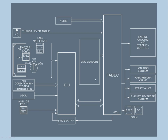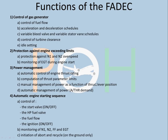Now for the functions of FADEC — there are many, but here are the main ones. It controls the gas generator. Important: there is protection against the engine exceeding limits — protection against N1 and N2 over-speeds, and monitoring of EGT during engine start with automatic shutdown if needed. Power management includes automatic control of engine thrust setting and computation of thrust parameter limits depending on ambient conditions. It also manages thrust lever position manually and handles auto-thrust demand automatically.